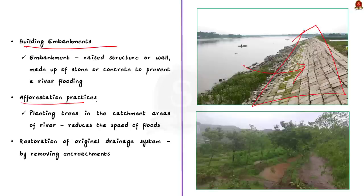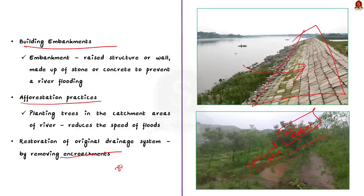The third flood control measure is carrying out afforestation practices. By planting trees in the catchment areas of the river, we can minimize flood effects, as trees control the speed of floods during heavy rains. Finally, floods can be controlled by restoring the original drainage system. The original drainage systems across the country are encroached upon for construction of roads, railways, buildings, canals, and so on. Due to this, excess water during the rainy season cannot drain, causing floods in urban areas. If the original drainage system is restored, we will be able to control floods.